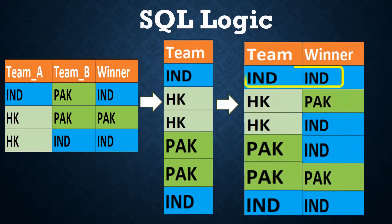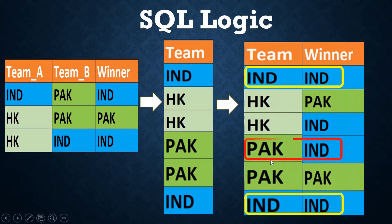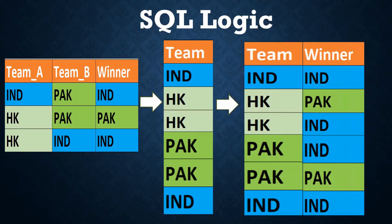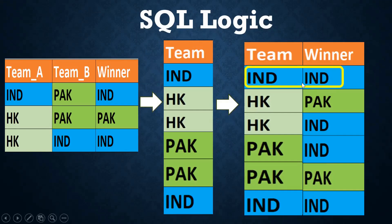Now what is the logic? When team and winner are both the same — for example India and India — that means India is the winner count. But when Pakistan played and India won, Pakistan loses. So when both team and winner are the same, it is a winning count. When both are different, it is a losing team. Pakistan is the losing team, India is the winning team.